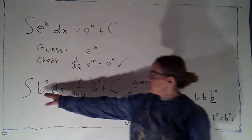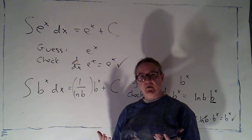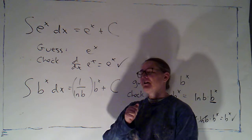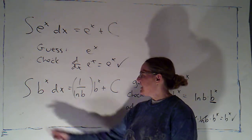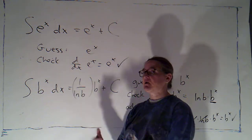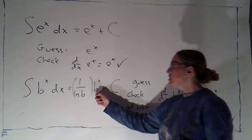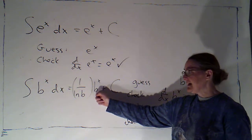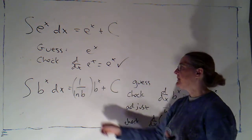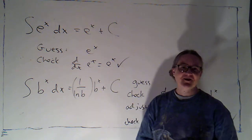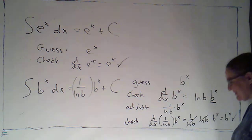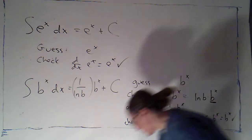So the antiderivative is 1 over the natural log of b times b to the x plus c. With an exponential function, if you take the derivative, you get the exponential function back multiplied by the natural log of the base. If you integrate an exponential function, you get the exponential function back divided by the natural log of the base, plus our arbitrary constant.